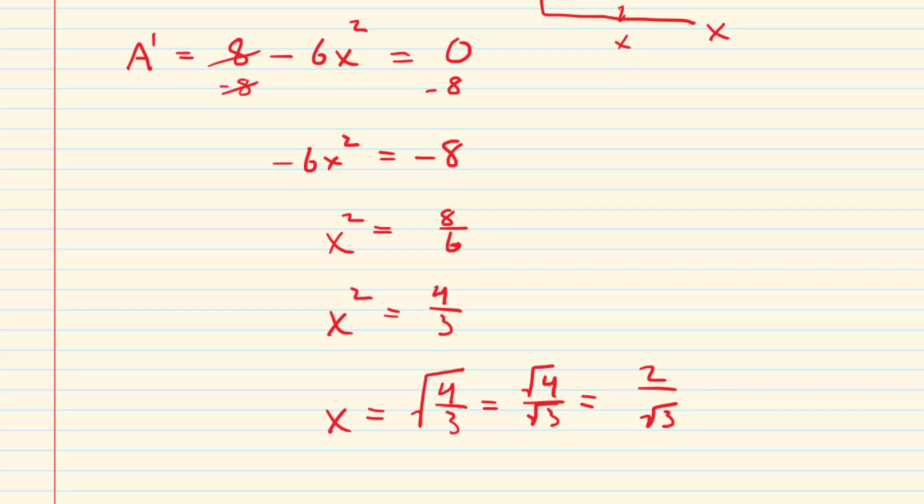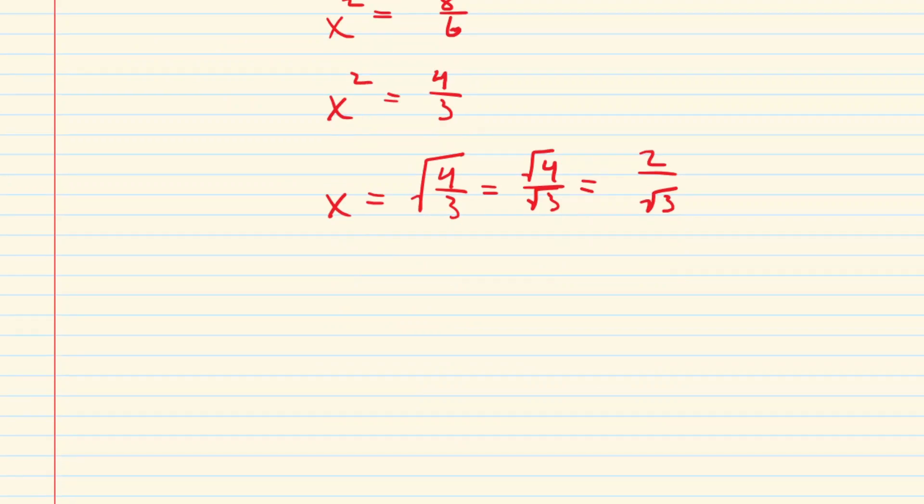We should probably prove that this does indeed maximize the area. And to do that, we will apply a first derivative test. Now in the first derivative test, you go ahead and you plot your critical number right in the center of a number line. So in this case, our critical number is 2 over root 3.